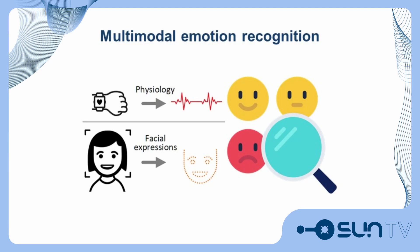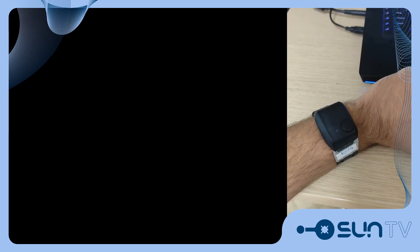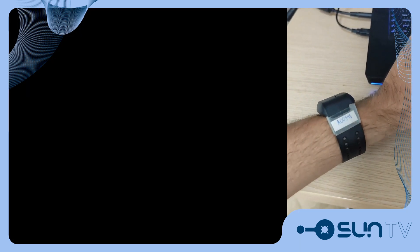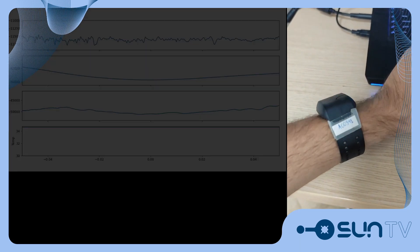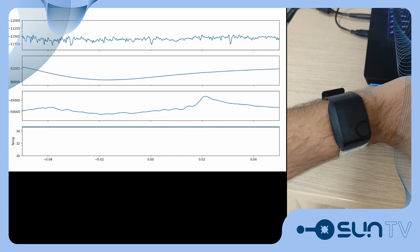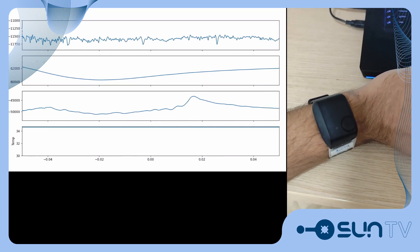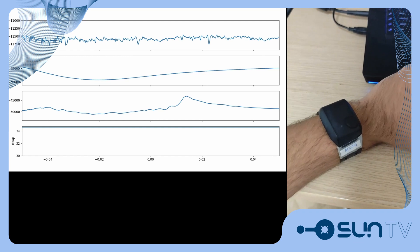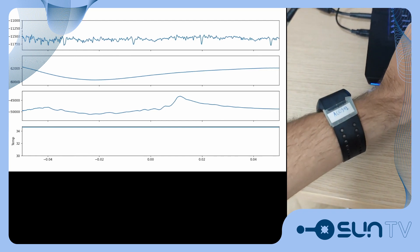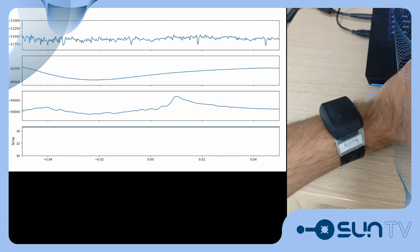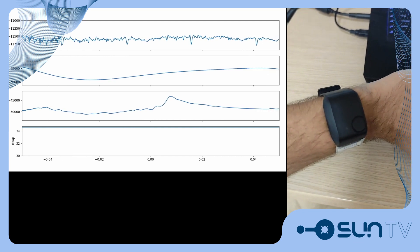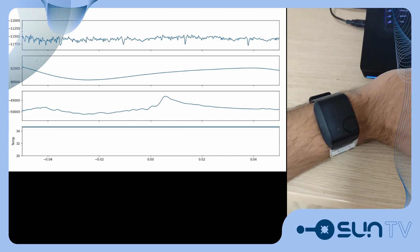In the following example, we can see how the multimodal emotion recognition component of the SUN Project operates. A user with a wearable device, like the smartwatch seen, is having their physiological signals — like heart rate, respiration, and temperature — captured and streamed in real-time. These physiological signals are processed through an AI component for sensor-based emotion recognition.